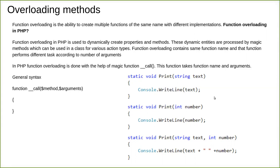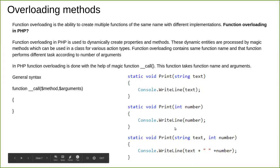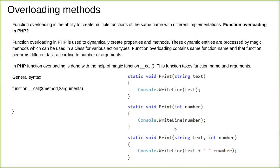Function overloading in PHP works differently from other languages — you have to handle it differently even though the concept is the same. It can be done with the magic function called double underscore 'call' — we have already seen two magic functions: constructor and destructor, written as '__construct' and '__destruct'. Similarly, there is one more magic function to handle overloading in PHP: '__call'. This function takes two arguments — the name of the method and an array of arguments.